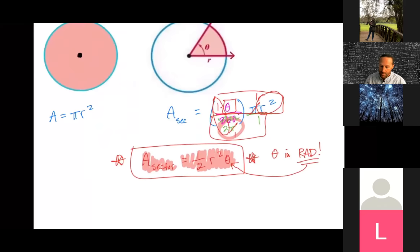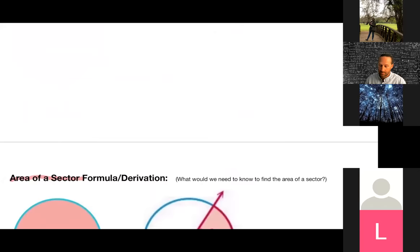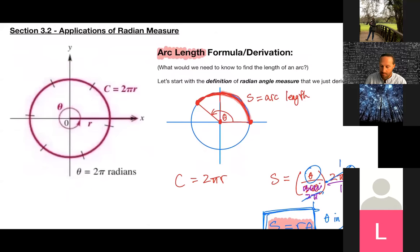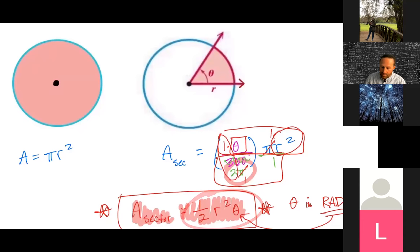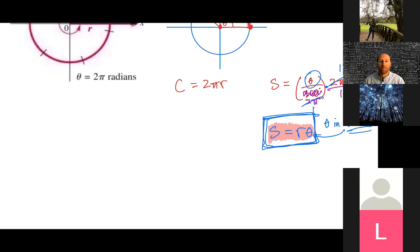To use both of these formulas — S = rθ and A = ½r²θ — you have to make sure they are in radians. Section 3.2 will be much more application-based, meaning word problems. All you have to figure out is: am I using the arc length formula because they're talking about the outside length of something, or the area of a sector formula because they're talking about the inside of something being rotated? The key is knowing r and θ for both.